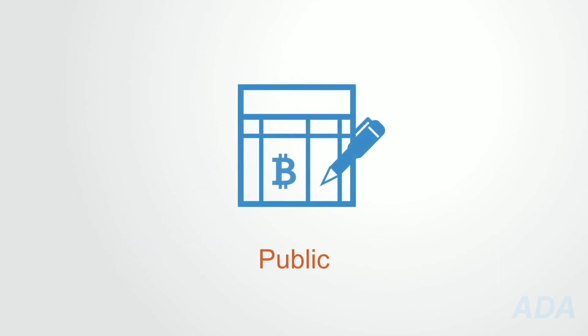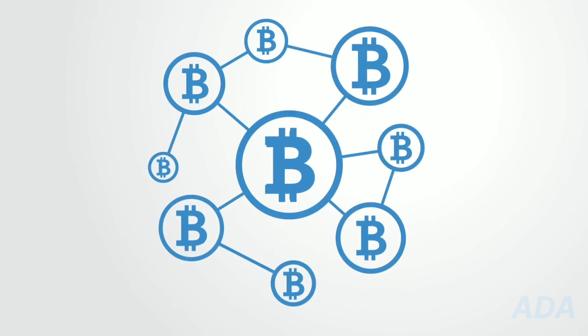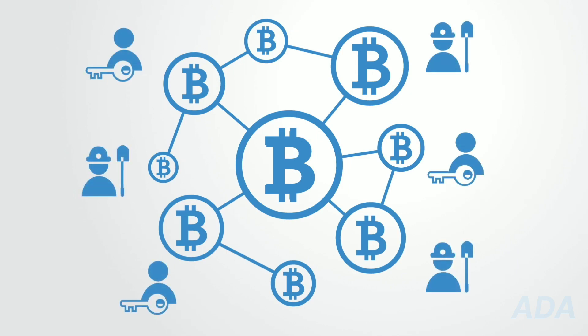The former type is maintained by public nodes and is accessible to anyone. Bitcoin is a well-known example of a public blockchain where anyone can read the chain, anyone can make legitimate changes, and anyone can write a new block into the chain.